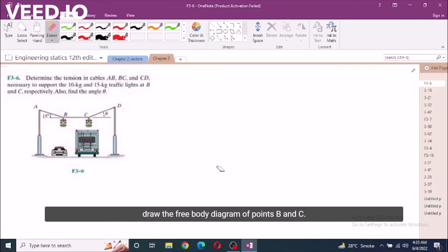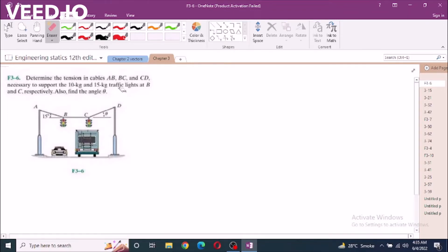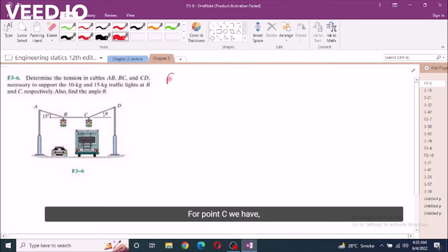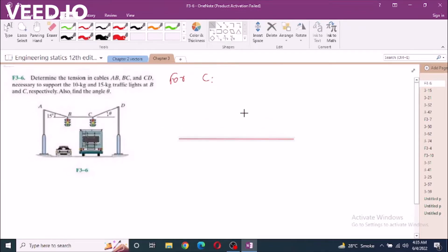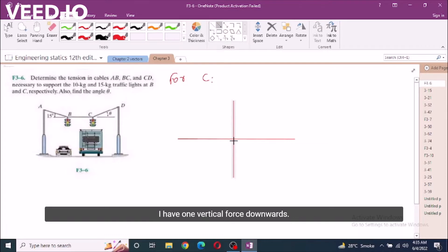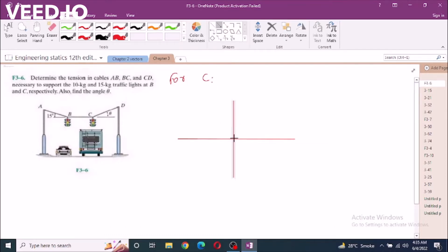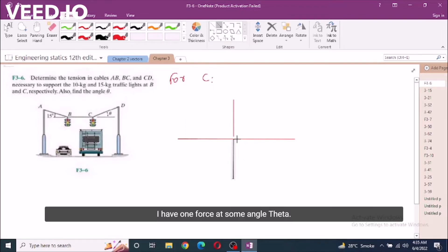We have to draw the free body diagram of point B and C. For point C, we have one vertical force downwards. I have one force at some angle theta. I have one force going in negative x direction. This is positive y, negative y, positive x, negative x. This point right here is C.